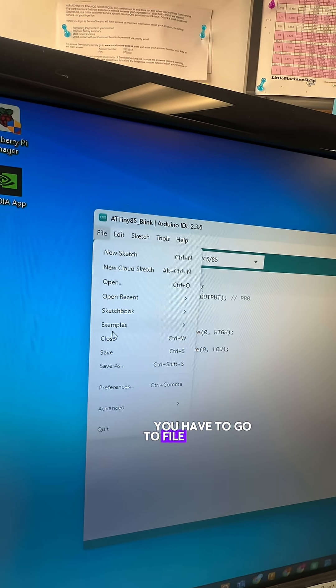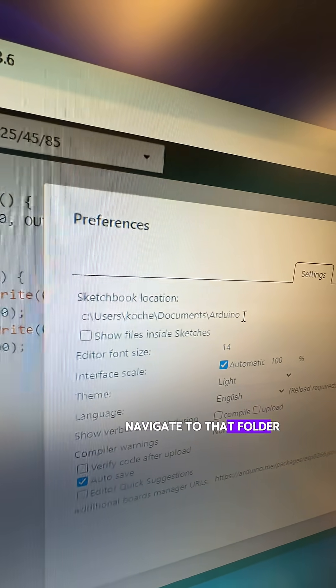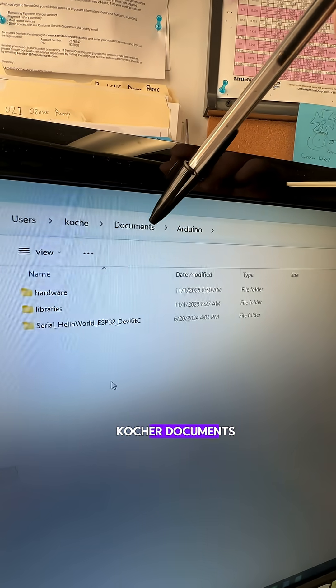In your sketch, you have to go to File, Preferences, and then note this sketchbook location. Navigate to that folder. In my case, I have a Windows PC. It's C, Users, Coher, Documents, Arduino.